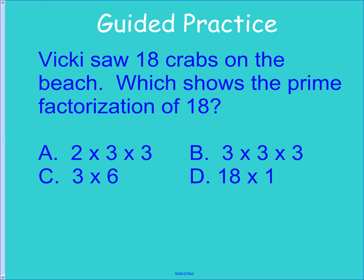Let's take a look at a little guided practice here. Vicki saw 18 crabs on the beach, which shows the prime factorization of 18. Well, 6 is not prime, 18 is not prime. So that leaves 2 options for us: 2 times 3 times 3, and 3 times 3 times 3. Well, 3 times 3 is 9, and 9 times 3 equals 27. 2 times 3 is 6, 6 times 3 is 18. So our answer is A.